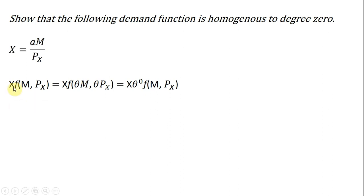Here, I'm just writing it in general. So demand, in this case, is a function of income and the price of good X. If we're to multiply income and the price of good X by some constant, it would leave the consumer's demand unchanged. In other words, if we factor out this theta term, it would be raised to the power of zero, and any number raised to the power of zero is just one.